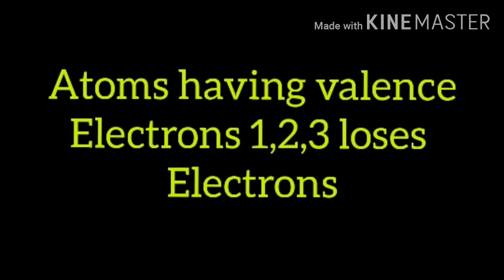Next: which atom loses electrons and which atom gains electrons? Atoms having 1, 2, or 3 electrons in their outermost shell will probably lose electrons to attain a stable electronic configuration. For example, sodium has 1 electron in its outermost shell. An atom with configuration 2, 8, 3 wants to lose 3 electrons to become 2, 8 — the stable configuration of neon.